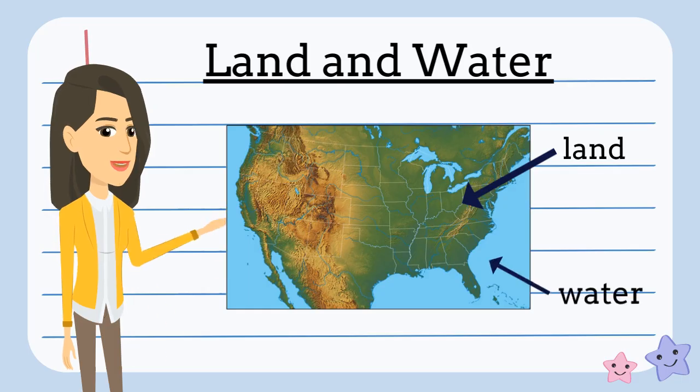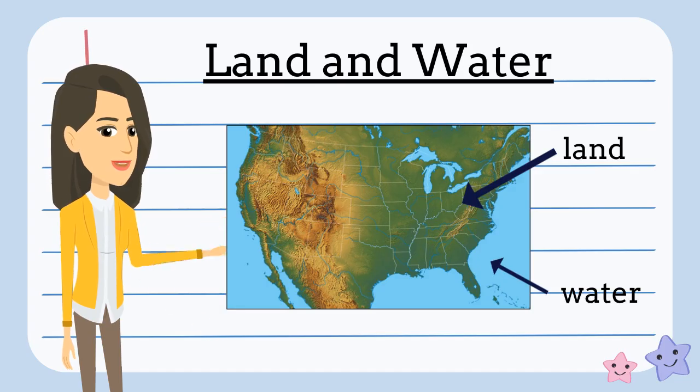This part of a map shows where the land and water are. Water on a map is usually blue and land can be green or brown.